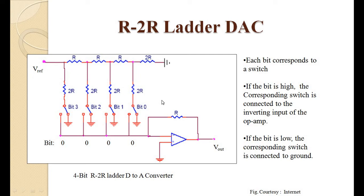Each bit corresponds to a switch. If a bit is high, the corresponding switch is connected to the inverting input of the operational amplifier. If the bit is low, the corresponding switch is connected to ground. In this diagram, all bits are 0, so all switches are connected to ground.